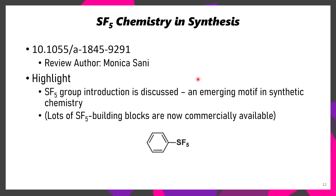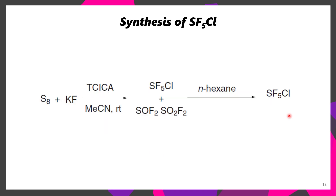The third and final paper for today is a review of SF5 chemistry in synthesis. One thing I did want to mention before we start is that a number of SF5 building blocks are now commercially available, so you might not need to synthesize your building blocks — you might just have to do a little bit more searching to find some SF5 building blocks that you can buy. We'll start with the cornerstone reagent for SF5 chemistry: that's SF5Cl. SF5Cl can be made from elemental sulfur and potassium fluoride in the presence of trichloroisocyanuric acid.